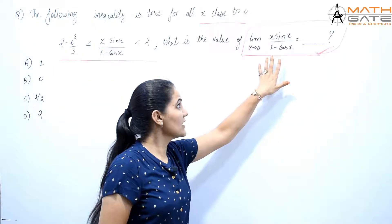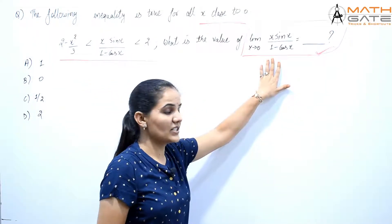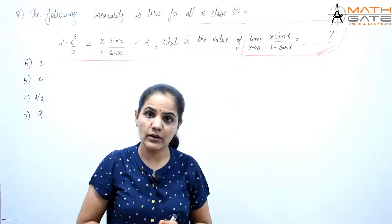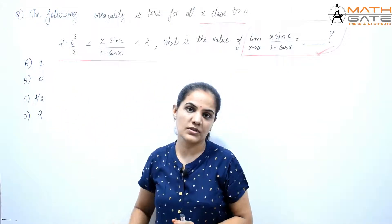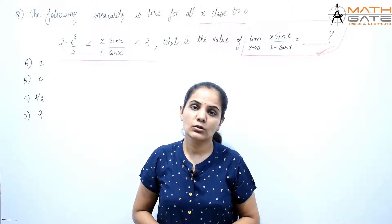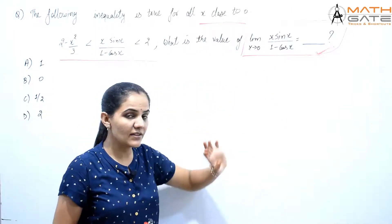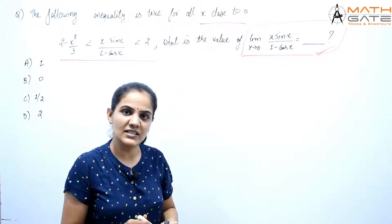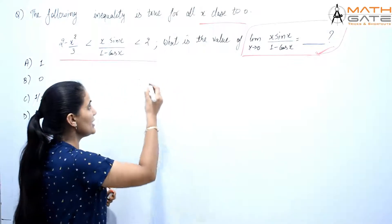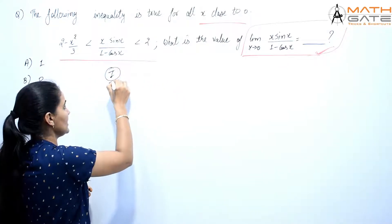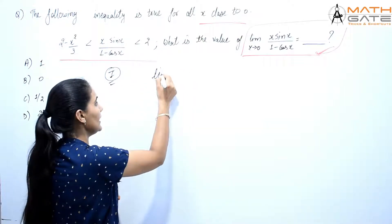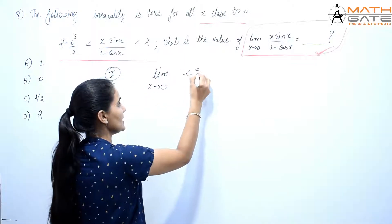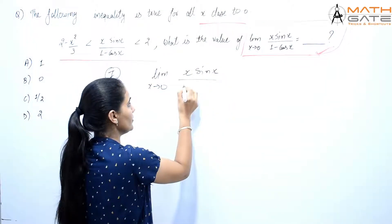The basic question is that we have to find the limit value of this function, and we also have options. So limit x tends to 0 of the function value we need to find. Let's discuss the first method for this question: we have limit x tends to 0 of x·sin(x)/(1 - cos(x)).